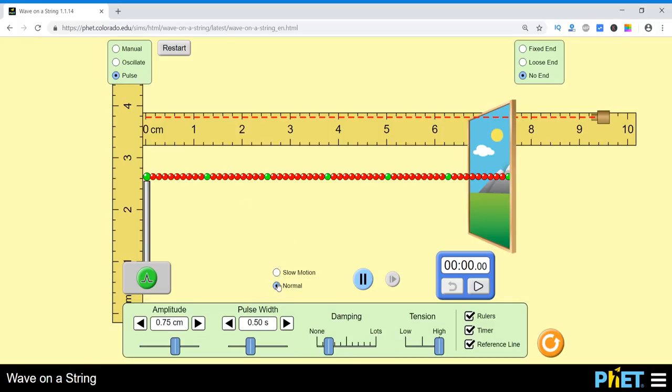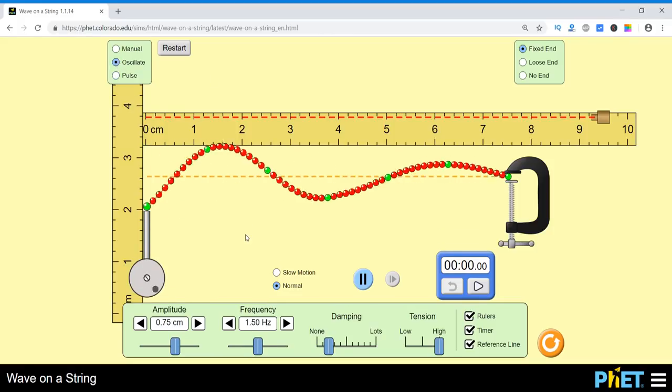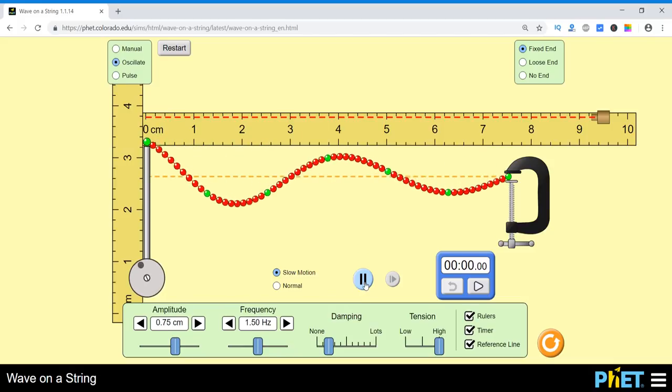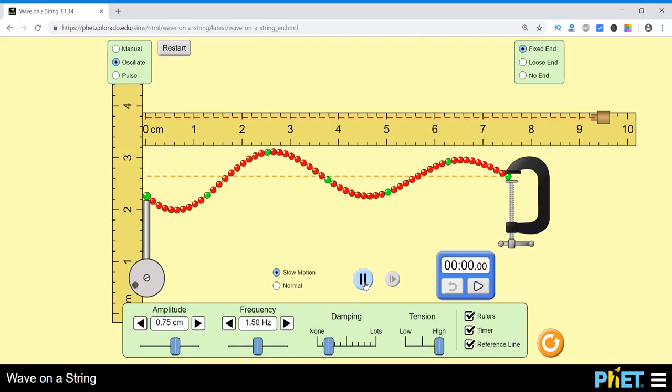First, let's see it in the normal motion. So let's start this experiment with this fixed end and let's oscillate it. So this is very fast. Let's see it in slow motion. This is slow motion. So observe variations.